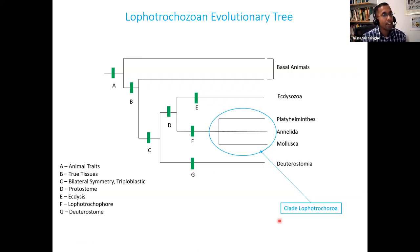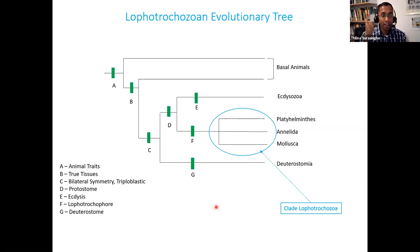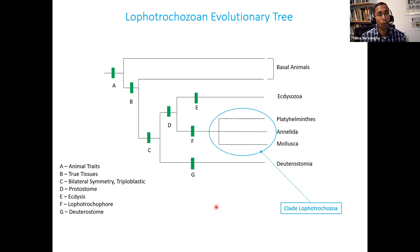The Lophotrochozoa clade is over here. Whenever you see something wrong, please speak up. Now, what kind of characters do we see in them? Two unique features: one, they actually have a trochophore larva — not just any larva, but a trochophore larva. Second, they have a particular structure called a lophophore that is helpful in feeding.